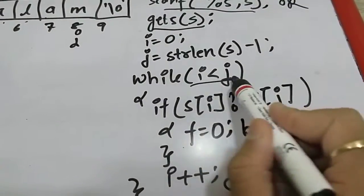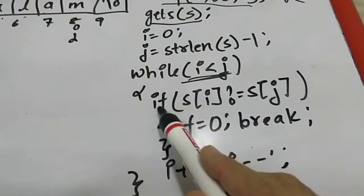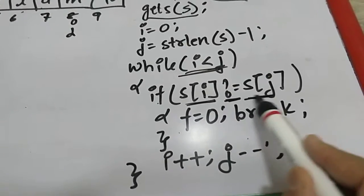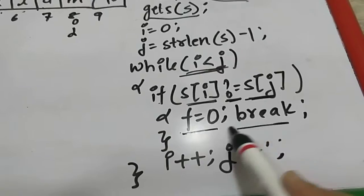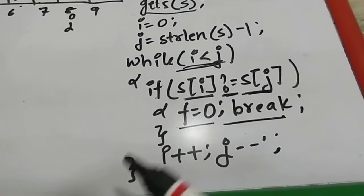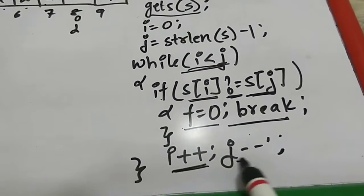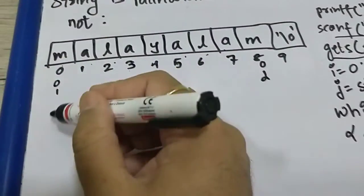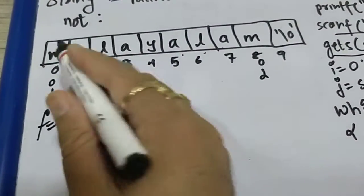So what it says, see, while i less than j, if there is even one such position where s of i is not equal to s of j, then flag is set to zero and break. And obviously i will increment and j will decrement. Let us see.